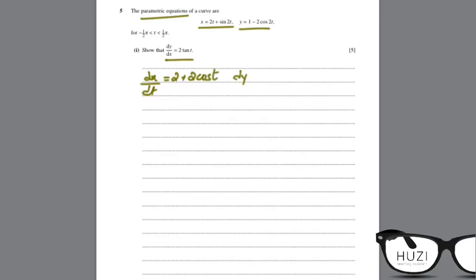dy by dt will be 1 minus 2 cos 2t equals y. So dy by dt is going to be minus 4 plus 4 sin 2t. So dy by dx is equal to dy by dt upon dx by dt.